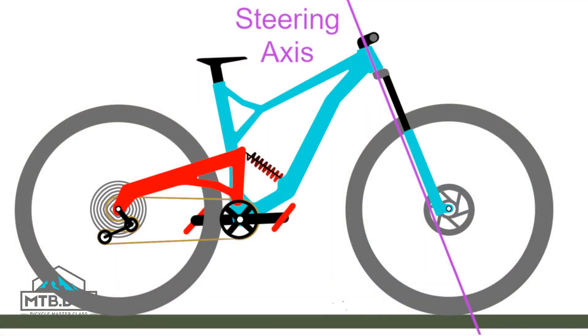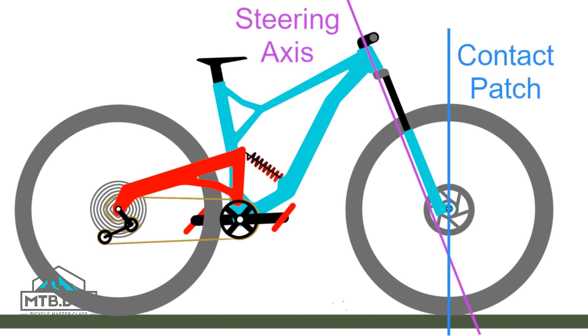We need to clarify some definitions. Steering axis is an imaginary line drawn through the center of the head tube angle and intersecting with the ground — it is essentially interchangeable with head tube angle. Contact patch is the center of area where the tire touches the ground; in this case it is directly below the axle. Trail is the distance along the ground between the contact patch and the steering axis, and this distance determines the amount of leverage and mechanical advantage that exists between the two points.